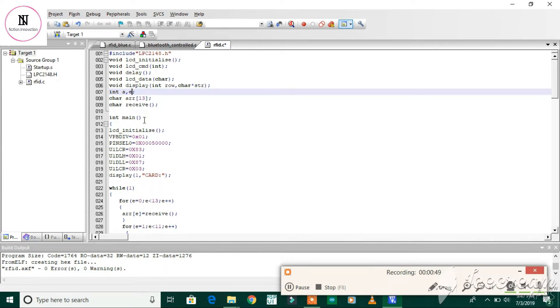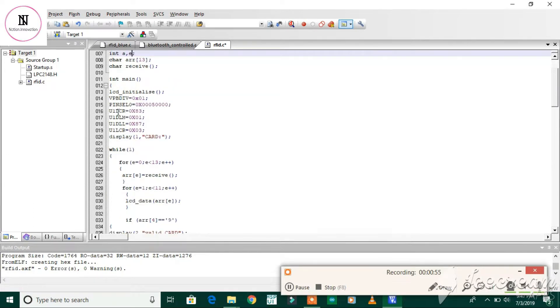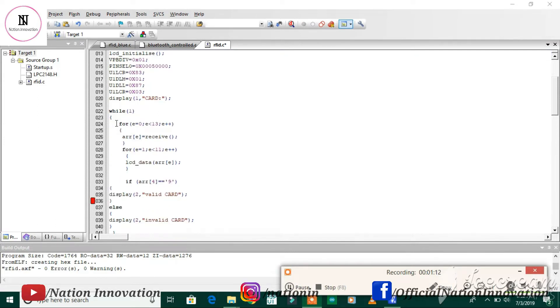This is the receive function of UART1. Here we are using UART1 for communication with the microcontroller. In the main program, we first initialize the LCD for displaying values or characters. After that, in the while one loop, we use a for loop since the card number has 13 digits.